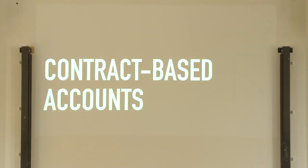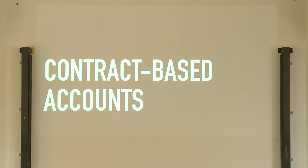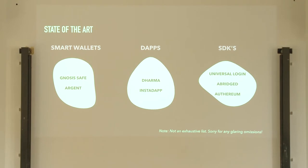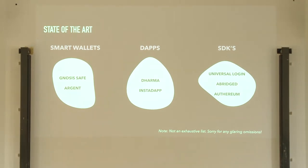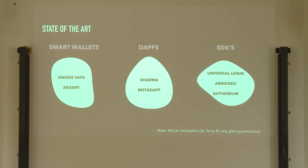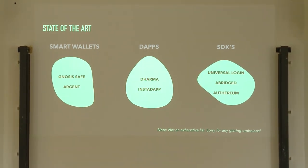So what are we talking about today? Contract-based accounts. For a quick definition, the idea is basically that you have a contract holding funds or sending transactions rather than a vanilla Ethereum account. The state-of-the-art for this space is being used in smart wallets — Gnosis is putting on this conference and they have the Gnosis Safe, and Argent is also a great smart wallet. There are a couple of dApps that have tried this as well, in particular Dharma and InstaDapp, which have this abstraction between the user's account and the dApp.